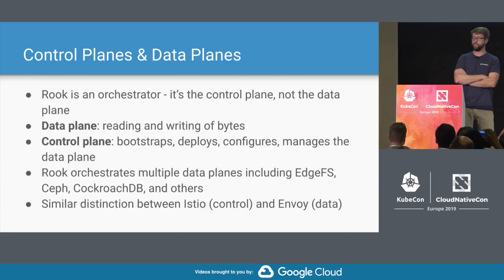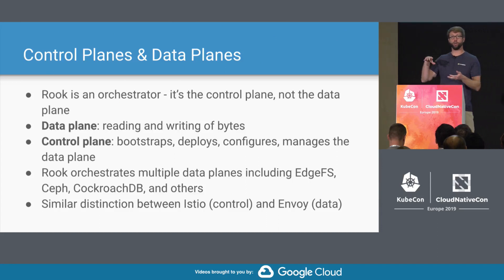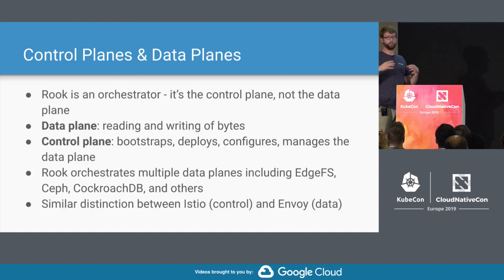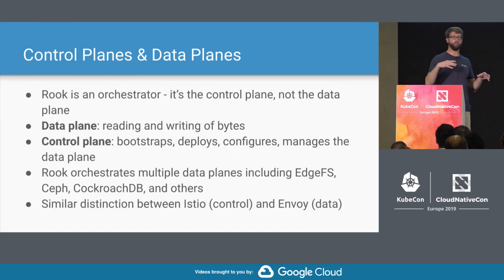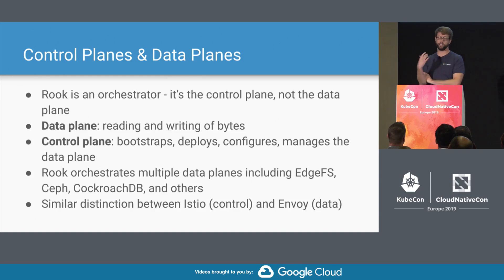Let's make a distinction between control planes and data planes. Rook as a storage orchestrator is a control plane — it is not the data plane. When you want to actually read or write bytes to your persistent storage, you're going through a data plane, through the underlying storage provider. Rook is the control plane: it does the operational tasks of deploying, bootstrapping, configuring, and managing the data plane. Rook itself is not on the data path, which means Rook can go offline for minutes at a time and not affect your data availability.